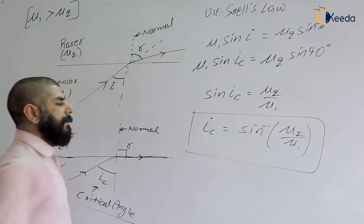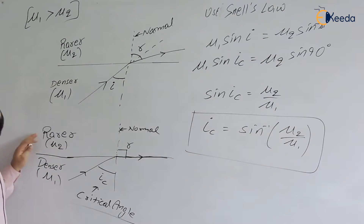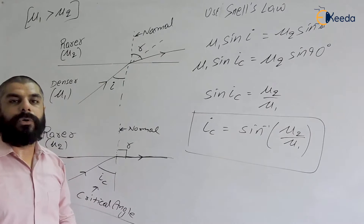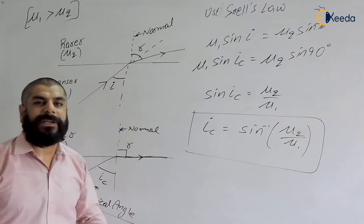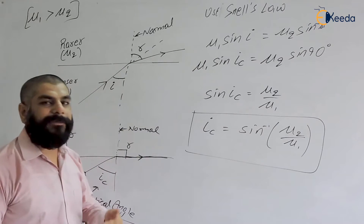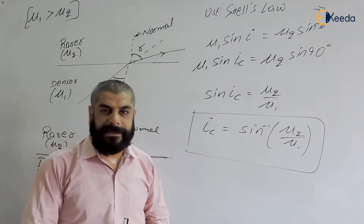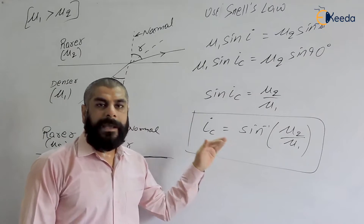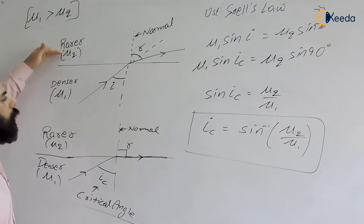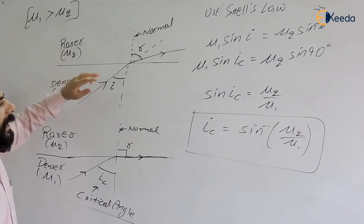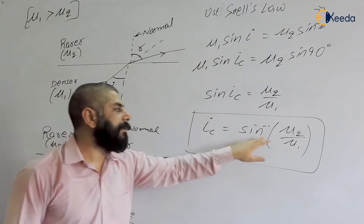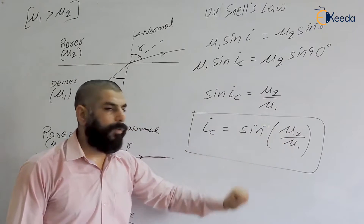This critical angle only occurs when light moves from a denser to a rarer medium. If light moves from a rarer to a denser medium, it bends towards the normal, and the angle of refraction will never reach 90 degrees. So the first condition for the critical angle is that light must move from denser to rarer, and the critical angle is given by sin⁻¹(mu2 / mu1).